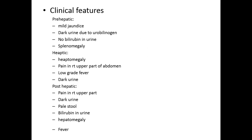Different presentations occur depending on the type of jaundice. The most common presentation is yellow discoloration of mucosa. In hemolytic jaundice, the basic sign is splenomegaly because excessive hemolysis occurs in the spleen. In hepatic jaundice, inflammation or damage to the hepatic system causes pain in the hepatic region with possible swelling. In post-hepatic jaundice, obstruction in the bile duct causes right upper quadrant pain. Gallstones are the most common cause of post-hepatic jaundice.